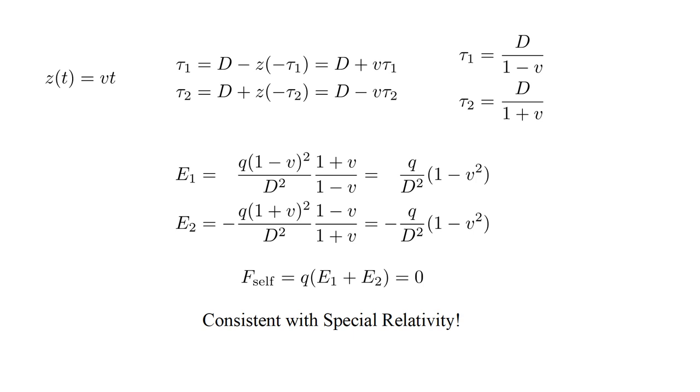This is great news because it's required by special relativity, according to which there is no physical way to establish an absolute state of motion. If there was an electron self-force which varied with velocity relative to some reference frame, then that frame could be taken to represent absolute rest, in violation of special relativity.